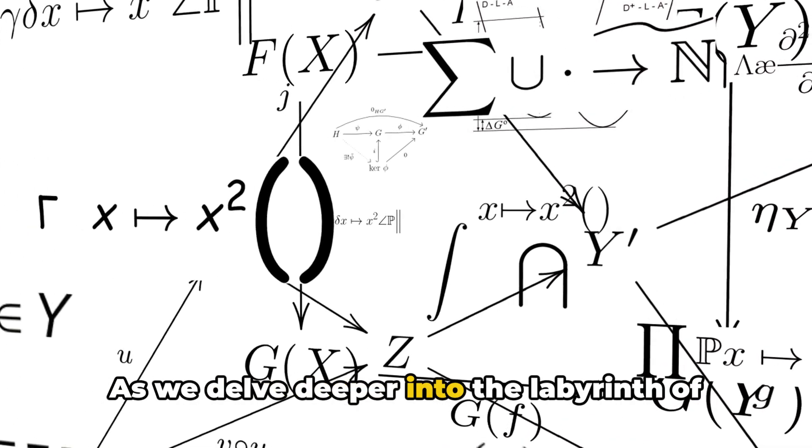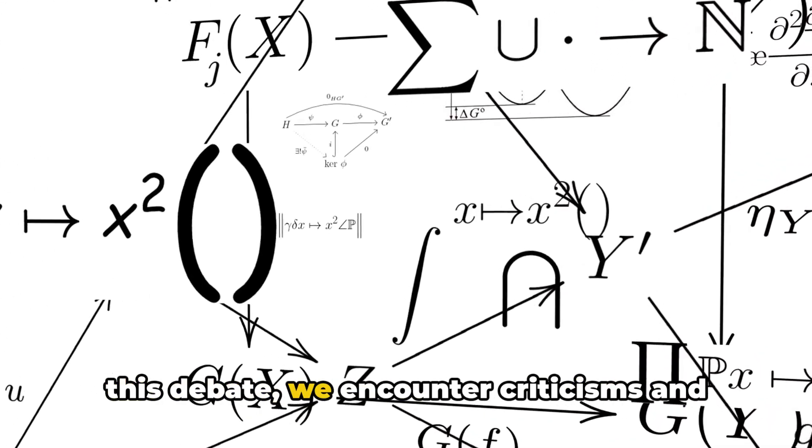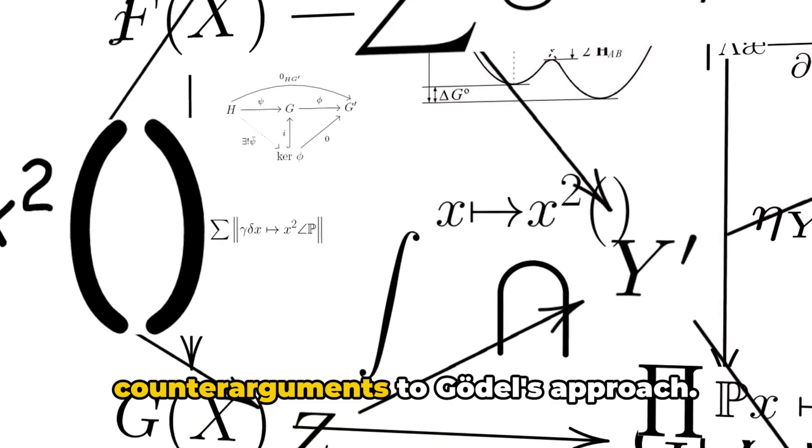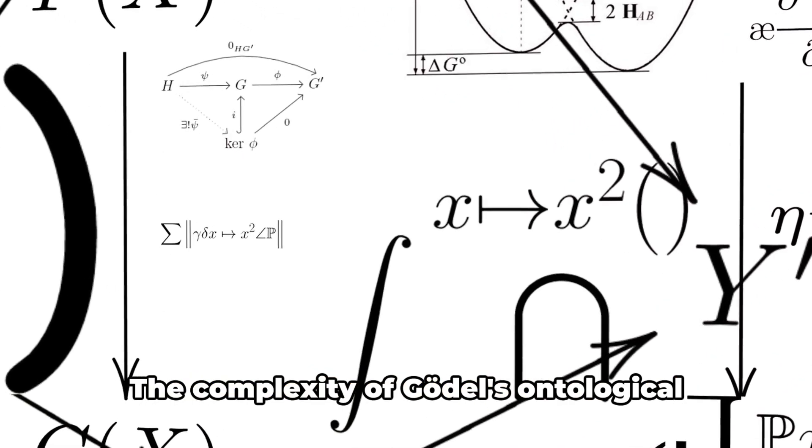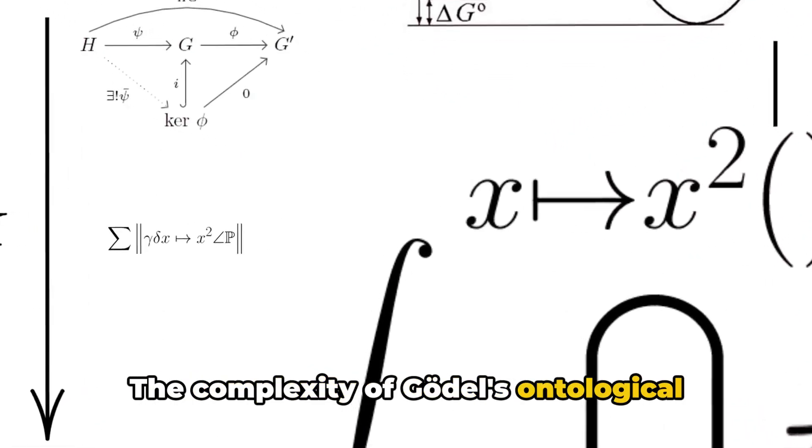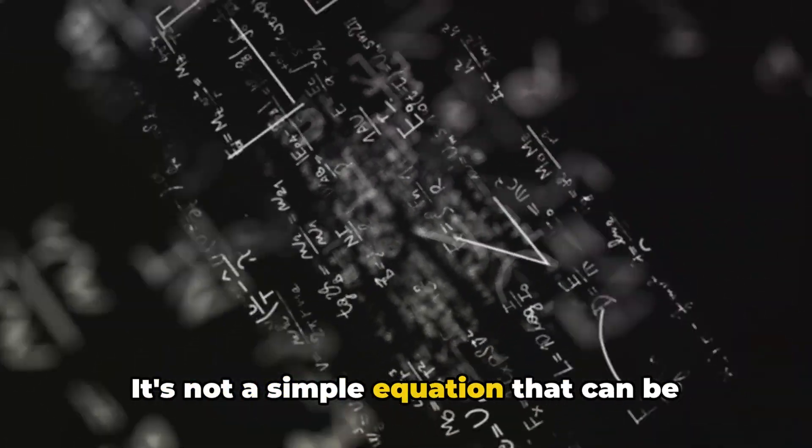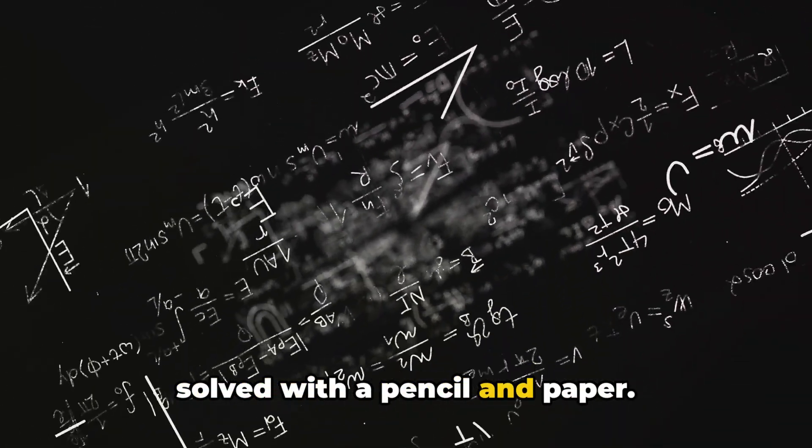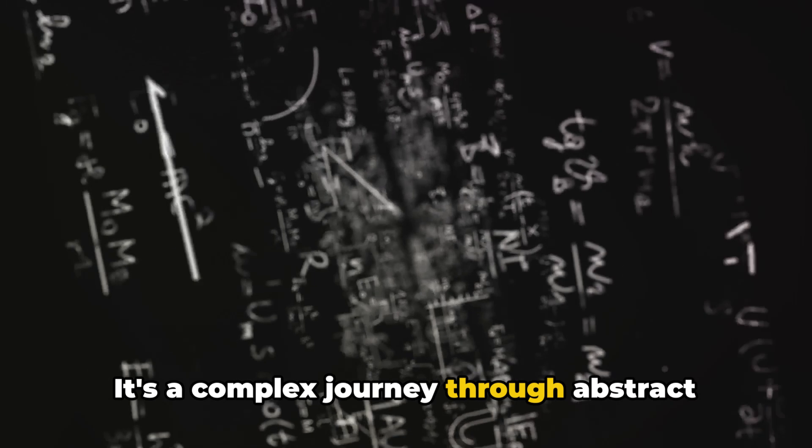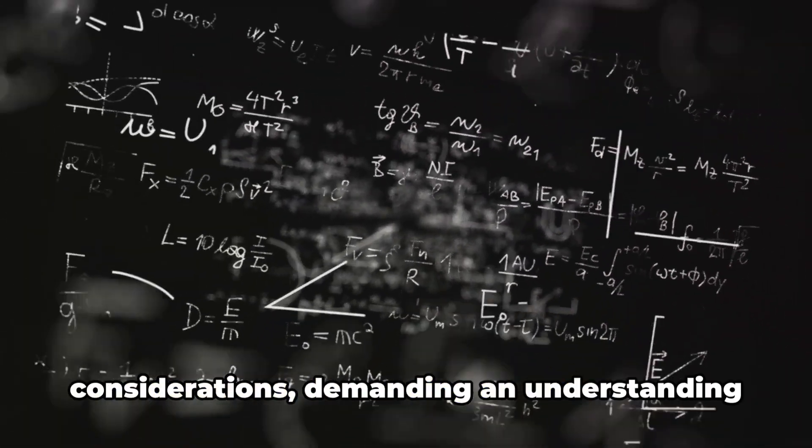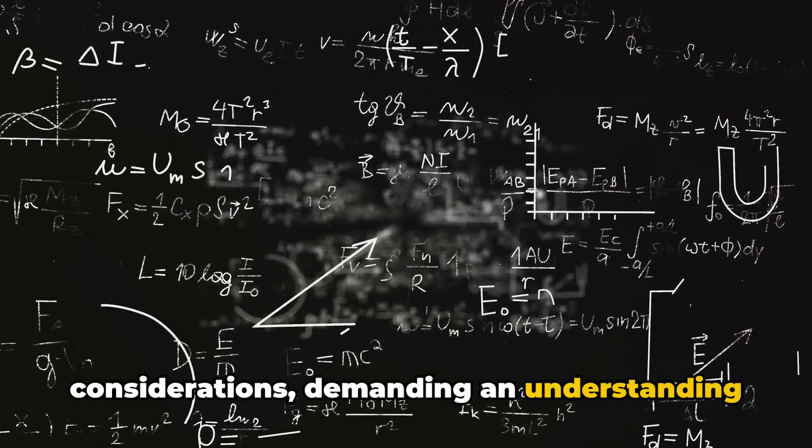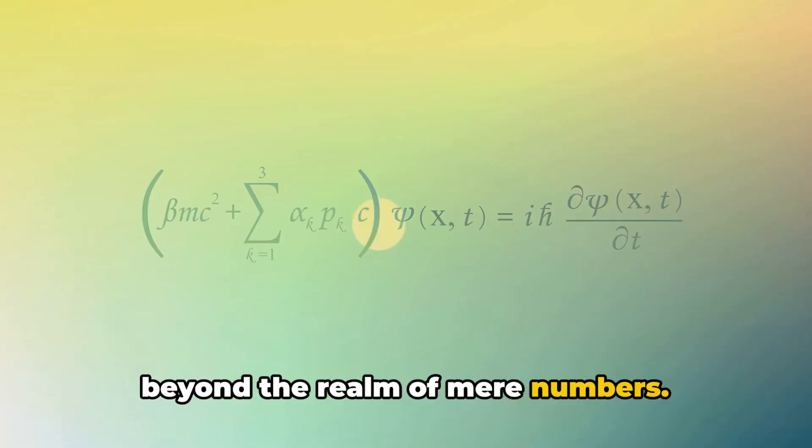As we delve deeper into the labyrinth of this debate, we encounter criticisms and counter-arguments to Gödel's approach. The complexity of Gödel's ontological proof is a point of contention for many. It's not a simple equation that can be solved with a pencil and paper. It's a complex journey through abstract concepts and intricate set-theoretic considerations, demanding an understanding beyond the realm of mere numbers.